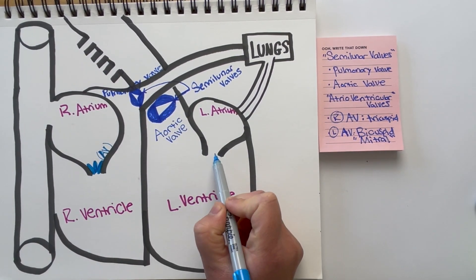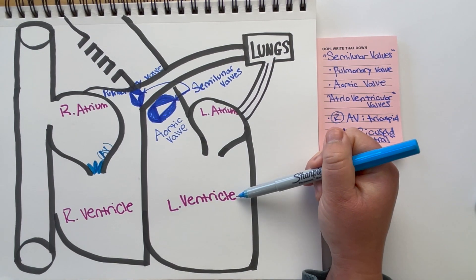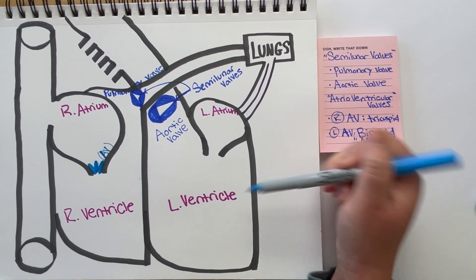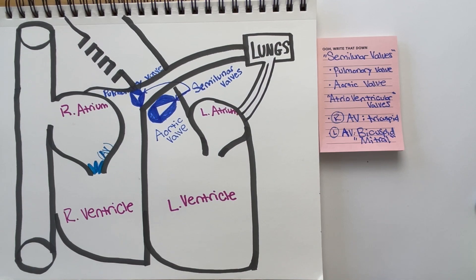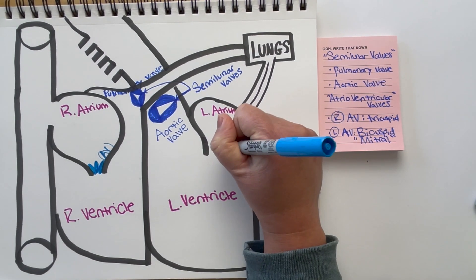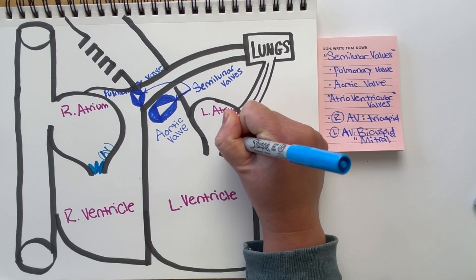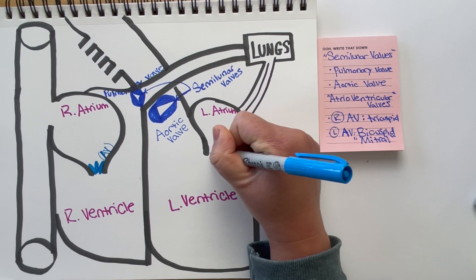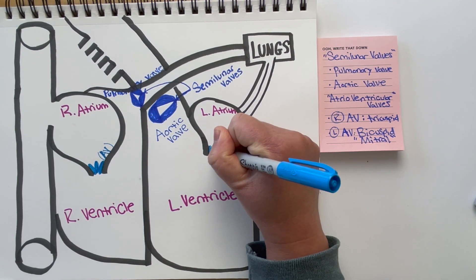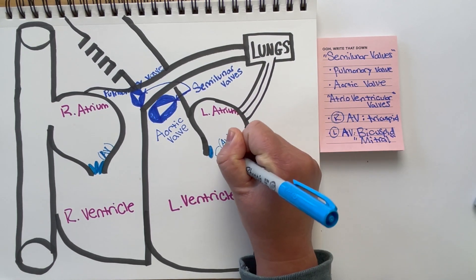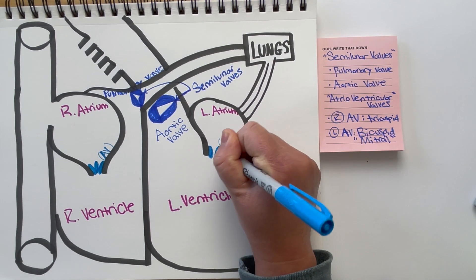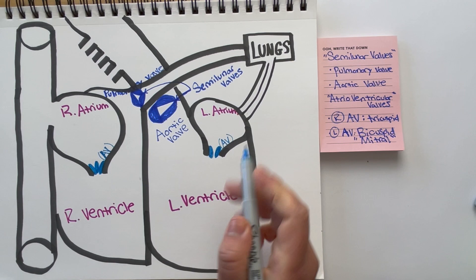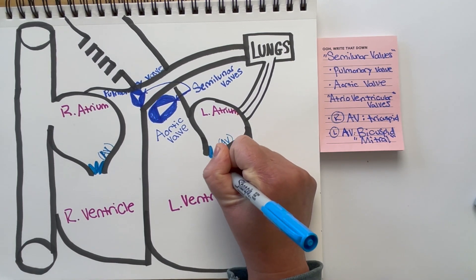On the left side of the heart, we have our left atrio-ventricular valve. This is also called the bicuspid valve — bi meaning two, so we have two cusps here. This is also called the mitral valve. Depending on your school or workplace, they might call it bicuspid or mitral valve. This valve separates the left atrium from the left ventricle, and it allows blood to flow from the left atrium downwards into the left ventricle, and it prevents back flow of blood from the left ventricle to the left atrium.